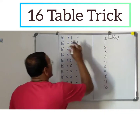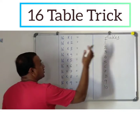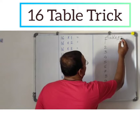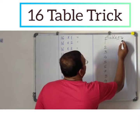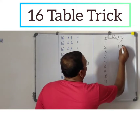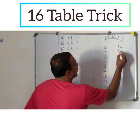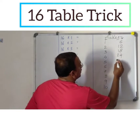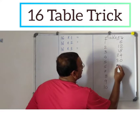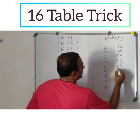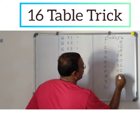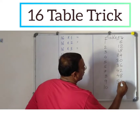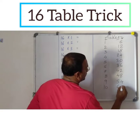Next, what is the next digit in 16? 6. Let's take the 6 table: 6, 12, 18, 24, 30, 36, 42, 48, 54 and 60.